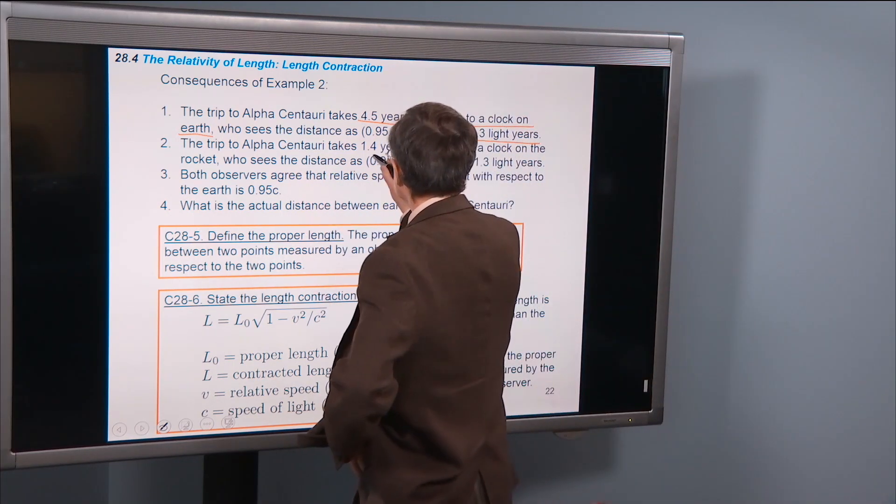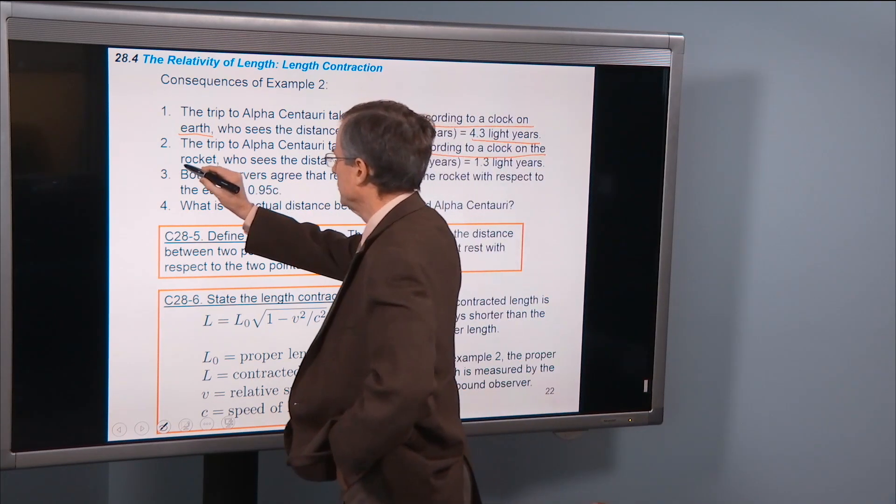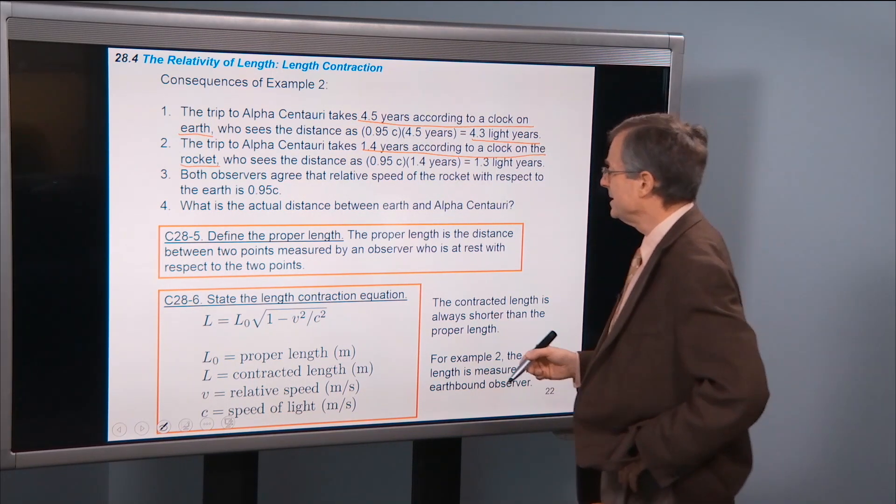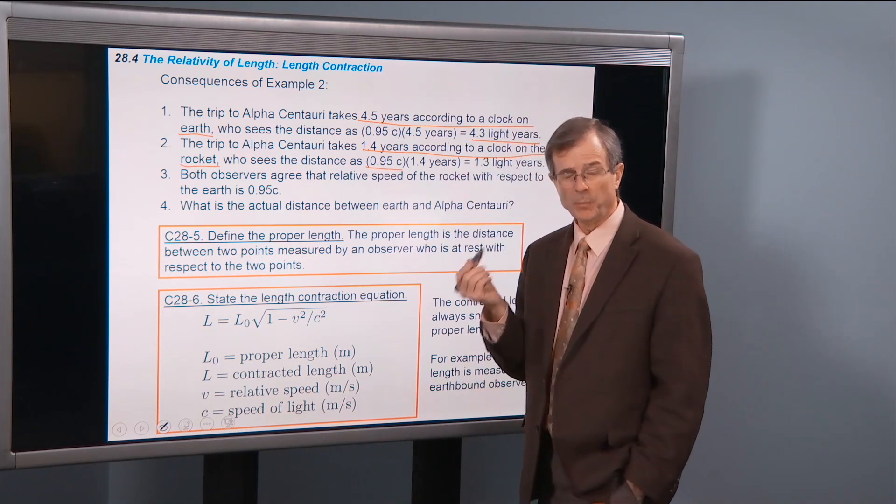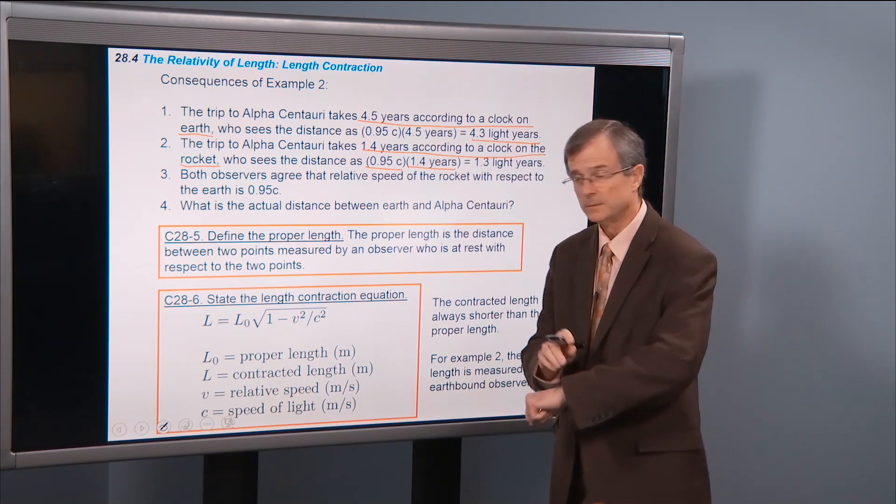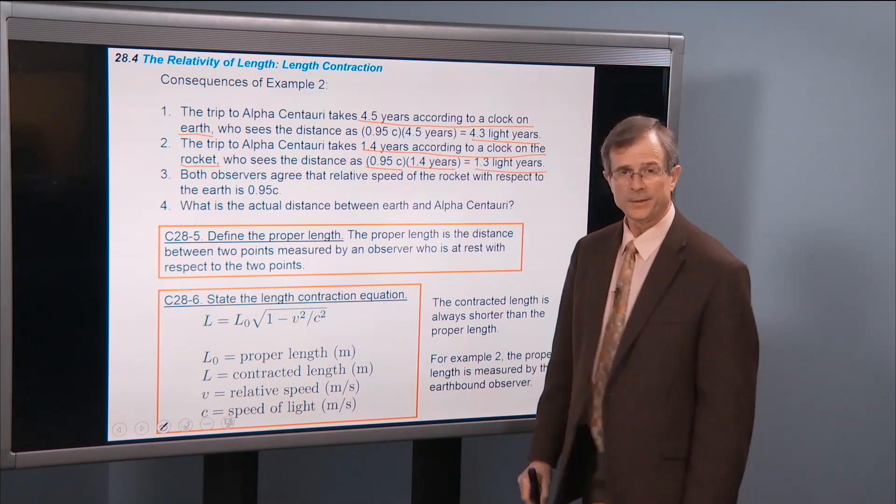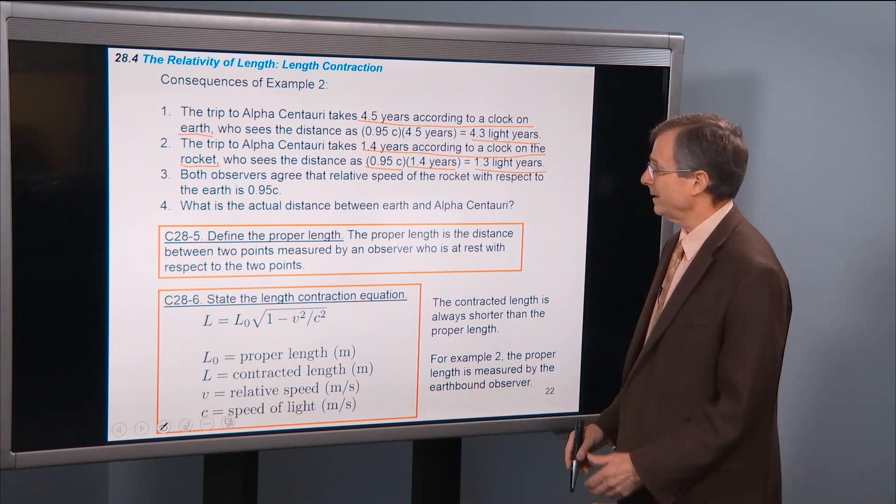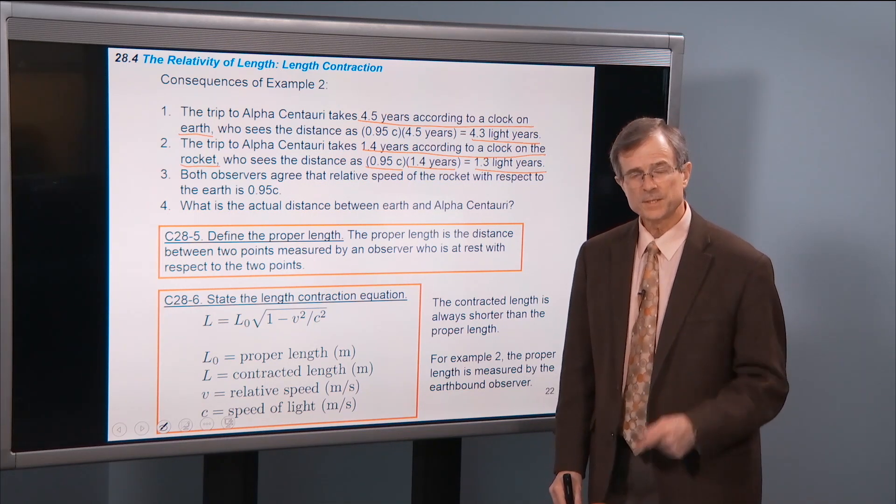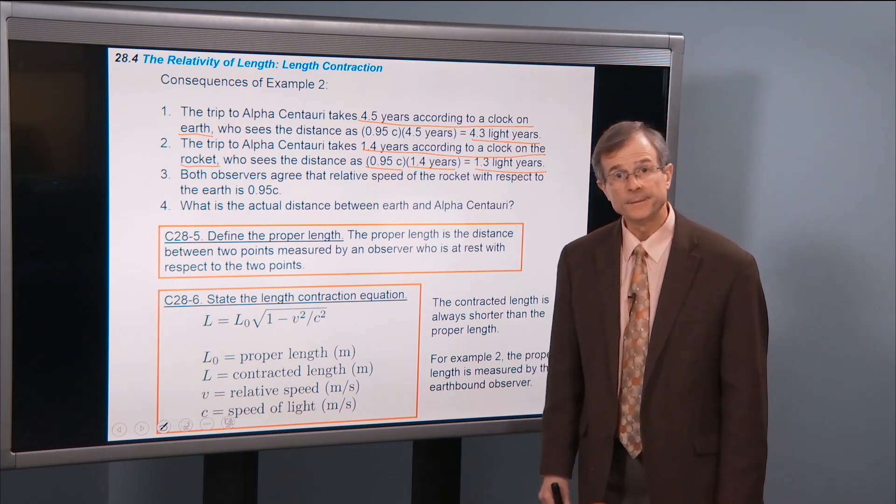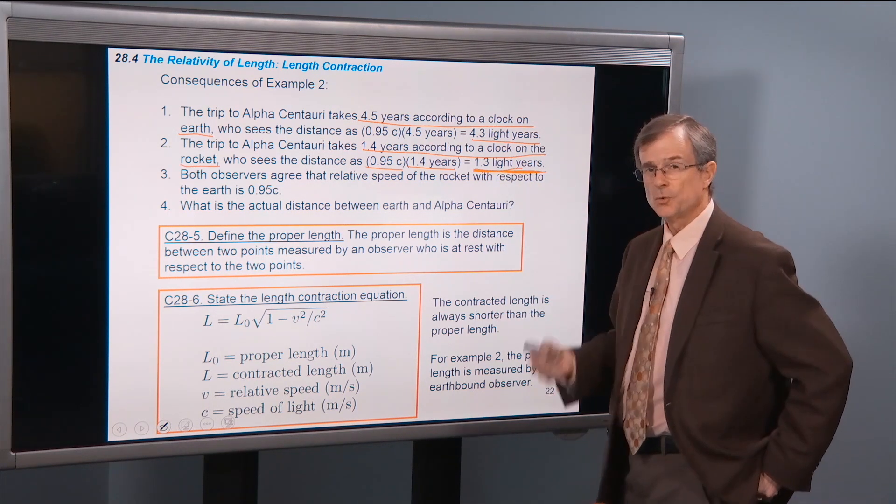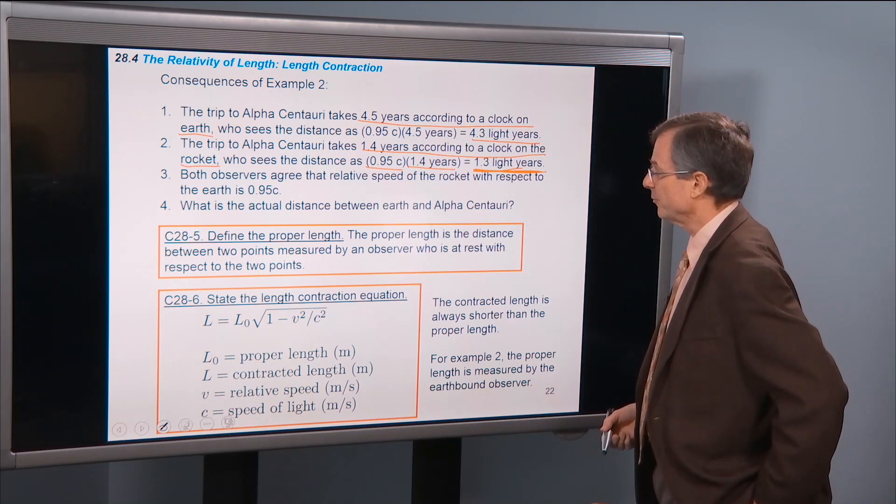The trip to Alpha Centauri takes 1.4 years according to a clock on the rocket. And that clock measures the proper time and sees the distance as 0.95c times 1.4 years measured on that clock equals 1.3 light years. So that astronaut sees the distance as less than the distance seen by the Earth-bound observer.